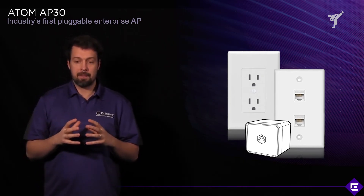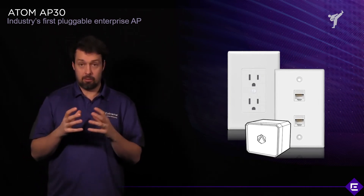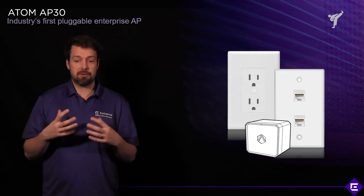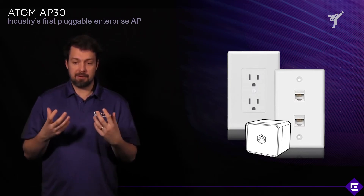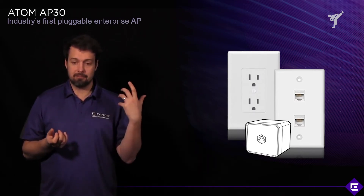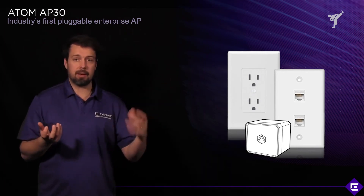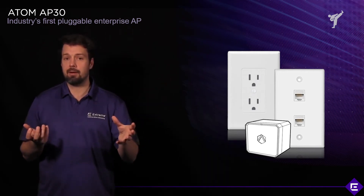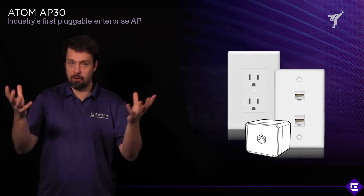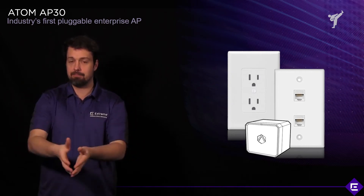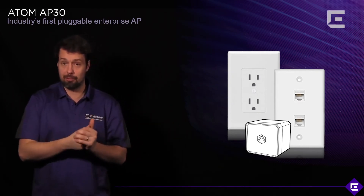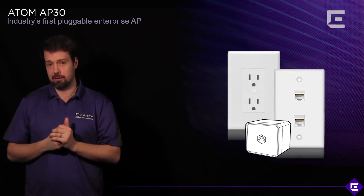The first one is ATOM, or AP30. It was the industry's first pluggable enterprise AP. The idea is you plug it into a power socket, it will automatically mesh with your environment, and provide network access and, more importantly, sensor capabilities.